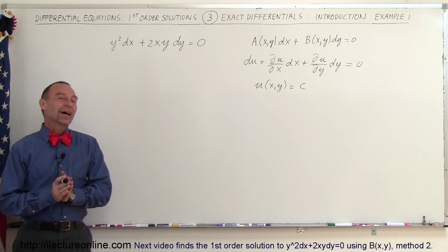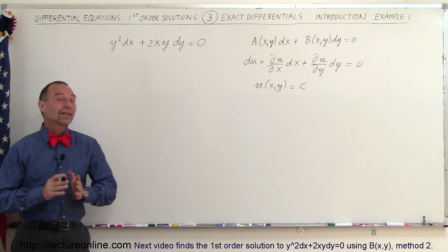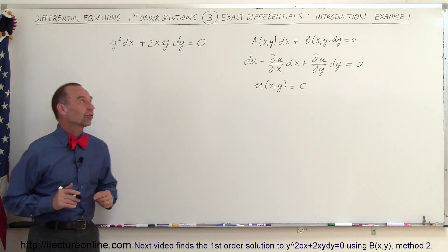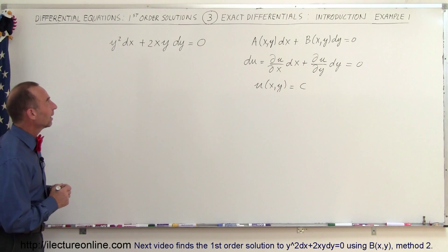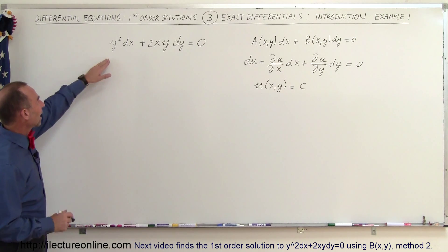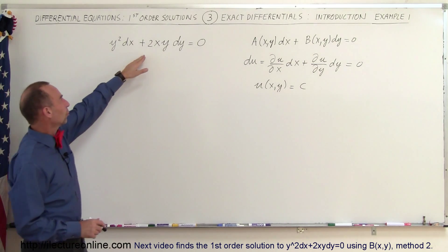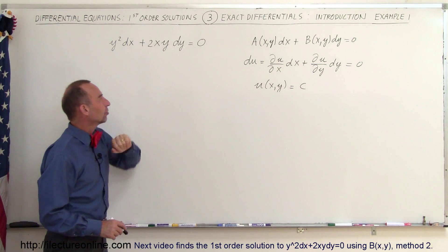Welcome to ElectronLine. Now let's do an example for an exact differential equation. Here we have y squared dx plus 2xy dy equals 0.